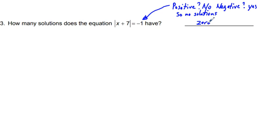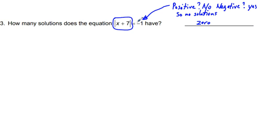Let's logically figure out why our answer is 0. The absolute value of any number has a minimum value of 0, so it must be 0 or greater than 0. It is impossible for the absolute value expression on the left to be less than 0. So when you've isolated the absolute value and have a number less than 0 on the right, that is simply no solutions — period.